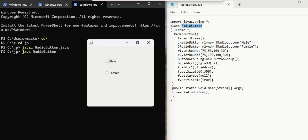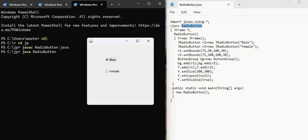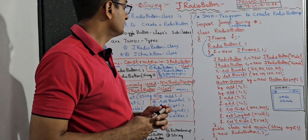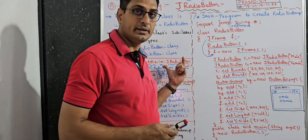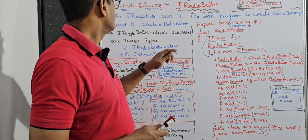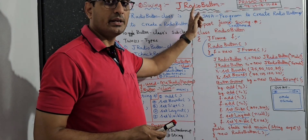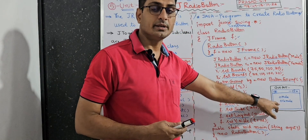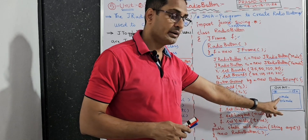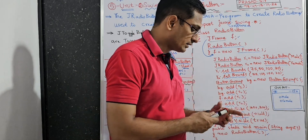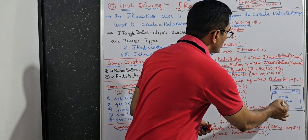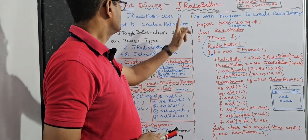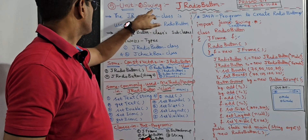It is compiled. Now we need to run the program. The syntax for running is java space file name — that is RadioButton. Yes, we got the output. In any application, if you are male click on male, if you are female click on female. Watch till the end, I will explain about the program in detail. The topic is JRadioButton class. This class is used to create radio buttons, like when you create a Gmail account or fill any application.